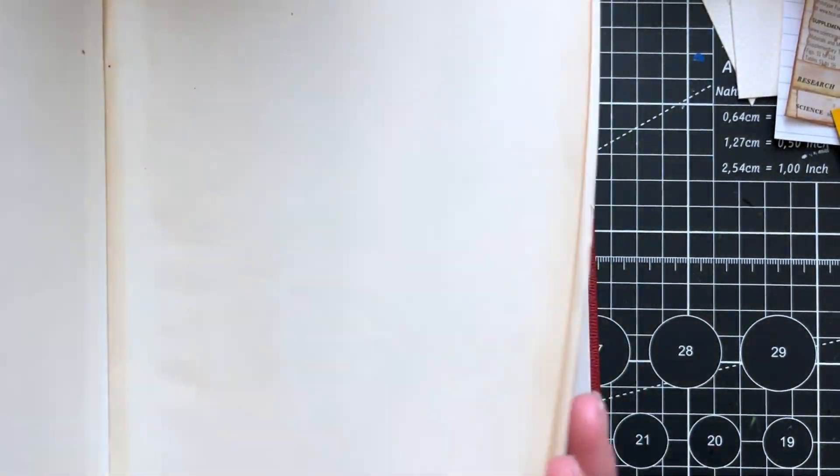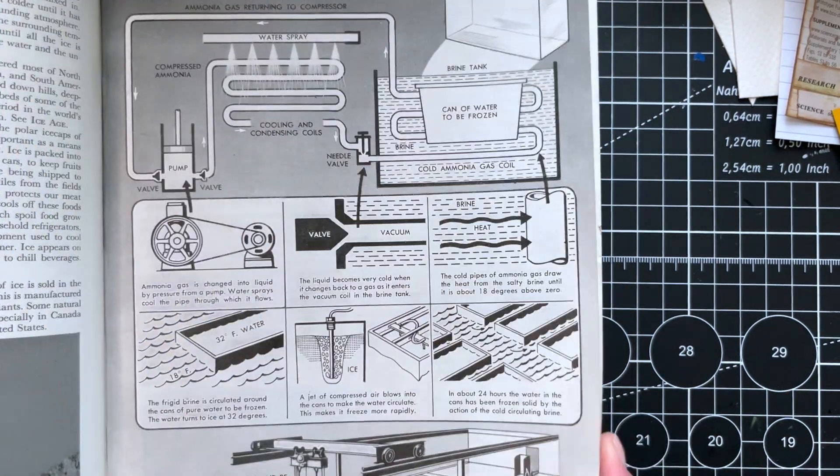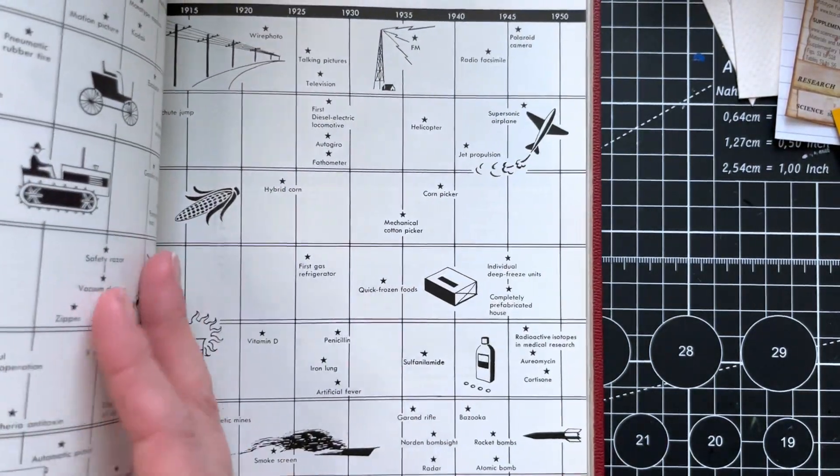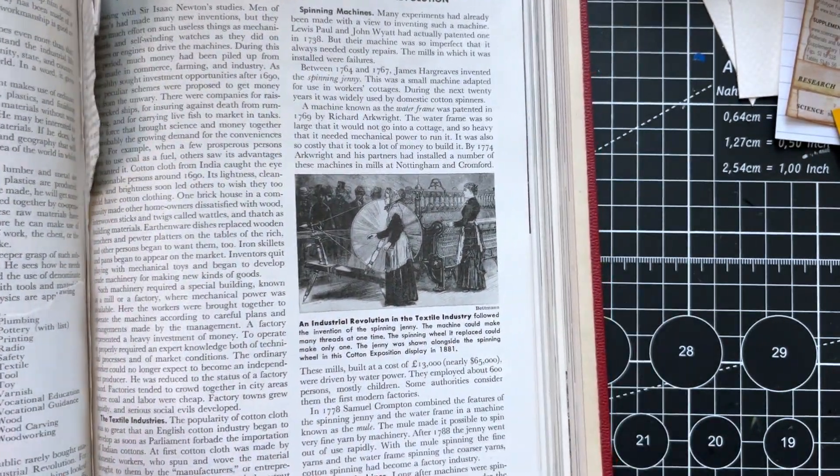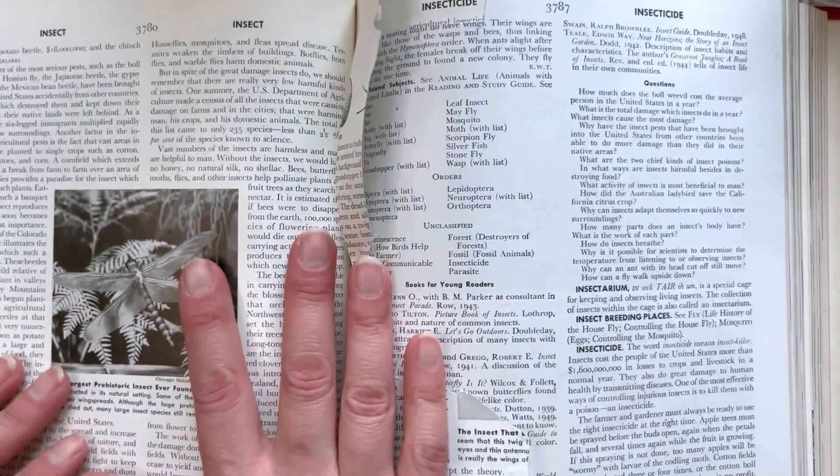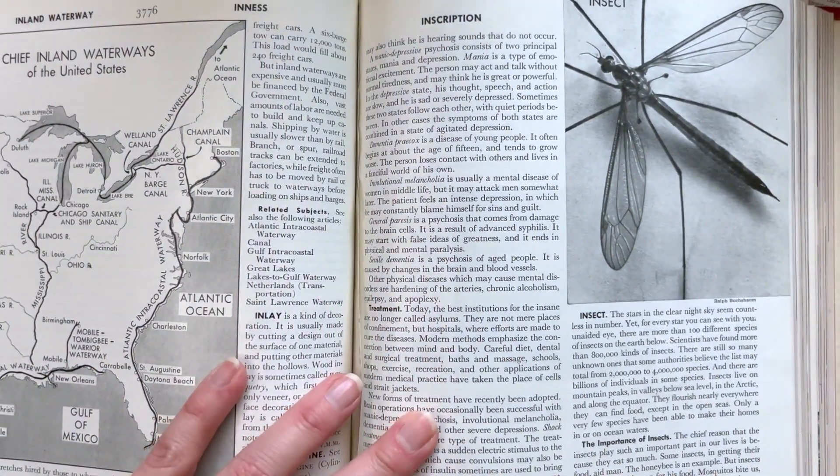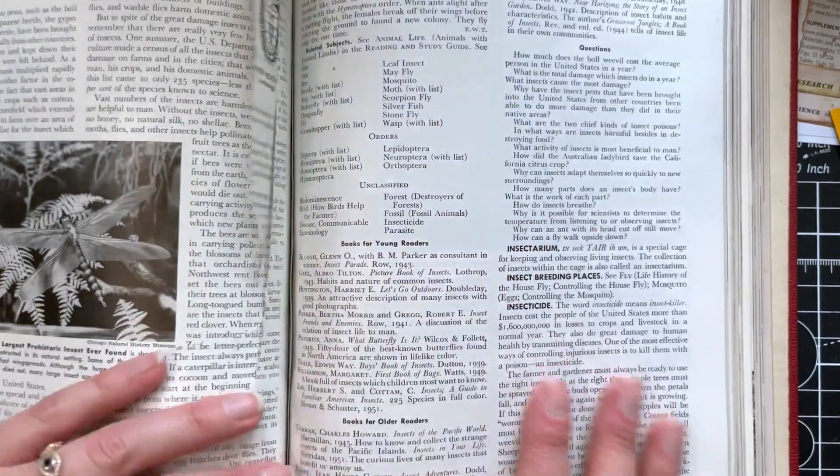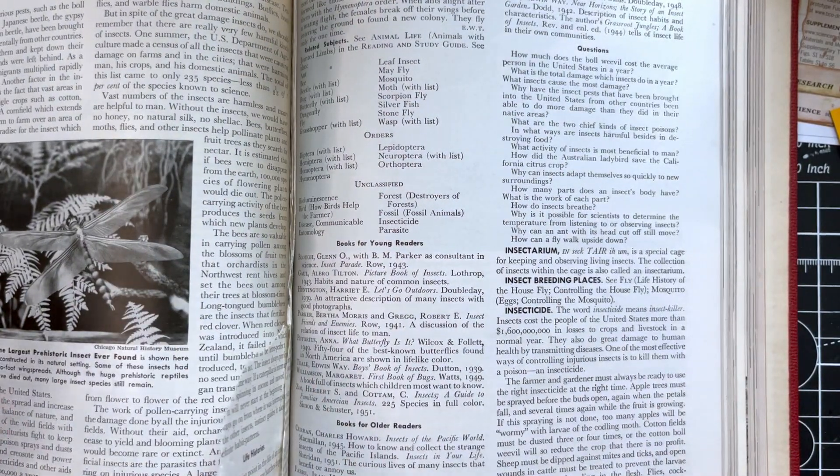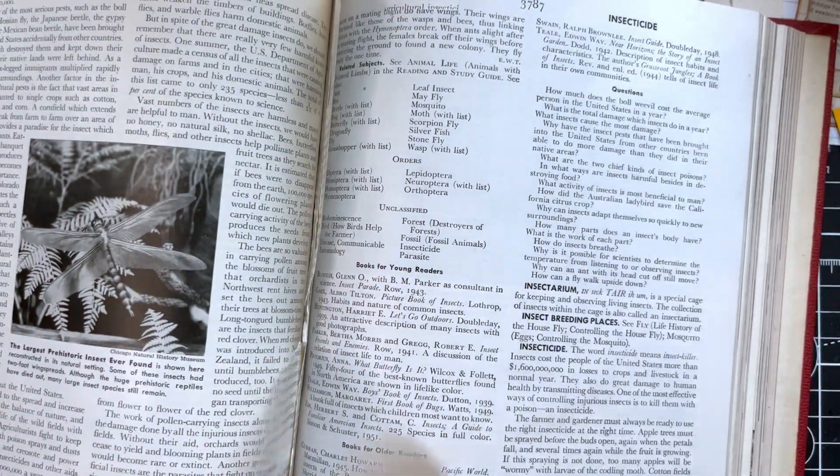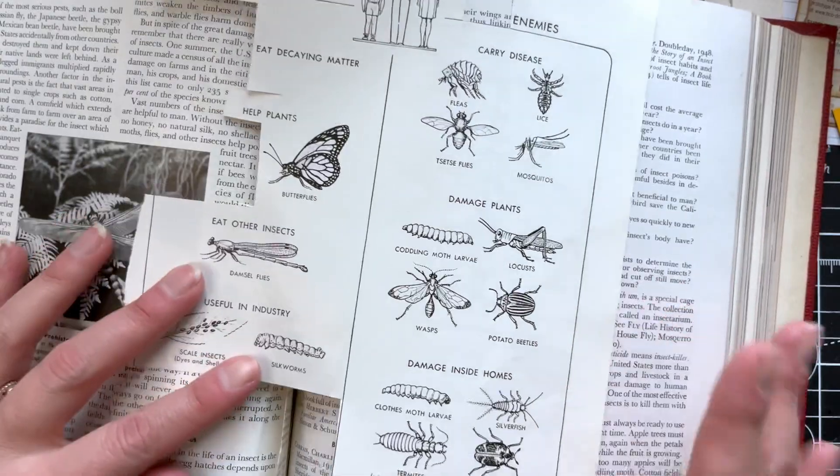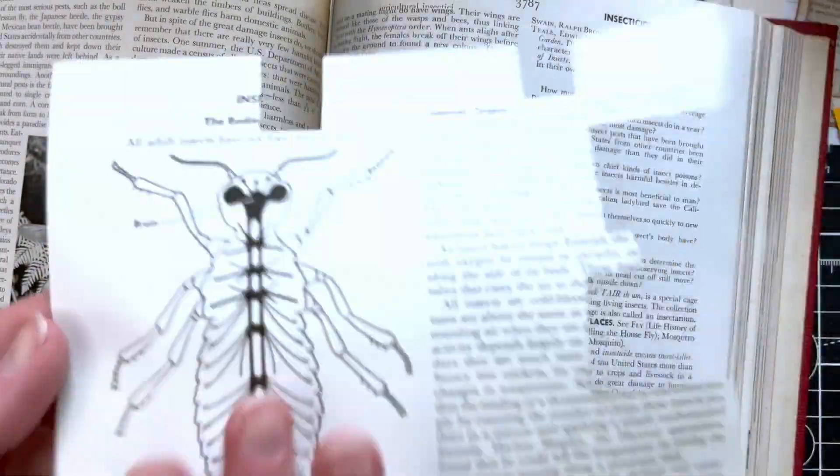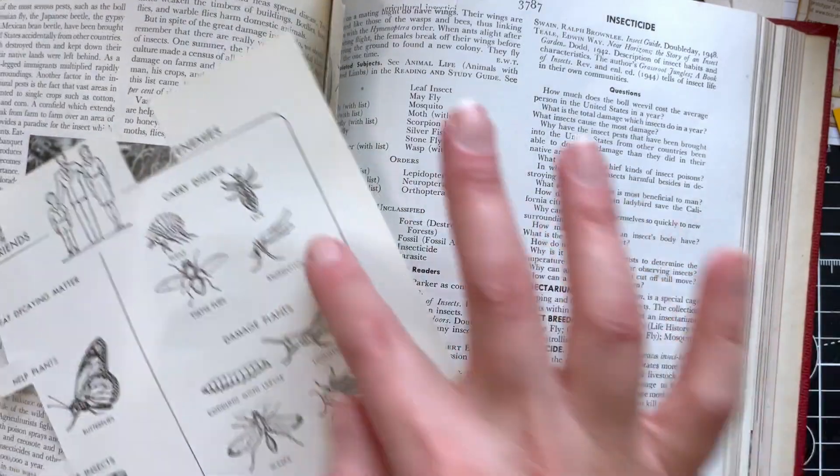So I have this old encyclopedia from the seventies, I think, and I have the letter I. So the letter I has a section about insects here. So I've been taking images from here. Unfortunately, when I bought this book, someone had already taken a lot of the insect images, which is kind of sad because I'm sure they were nice images, but I was still able to recover this one.